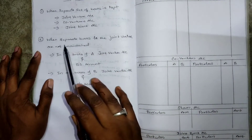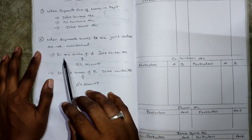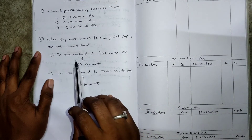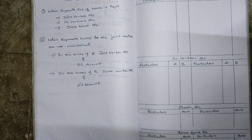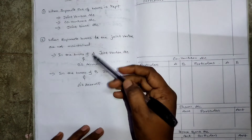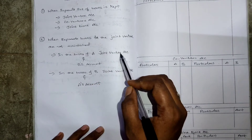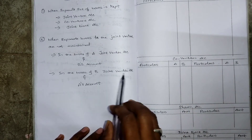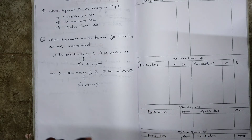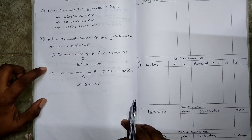When separate books of the joint venture are not maintained, there are questions about the books of both parties. Total 4 accounts are opened: in the books of A — Joint Venture Account and B's Account; in the books of B — Joint Venture Account and A's Account. So total accounts maintained is 4.